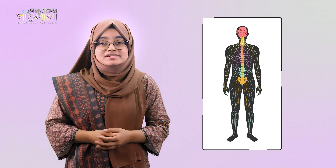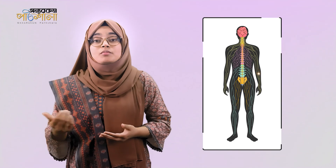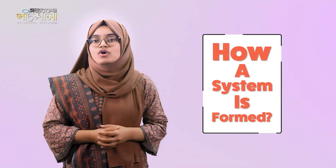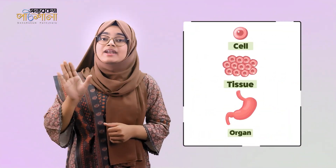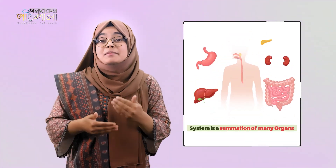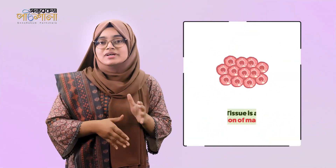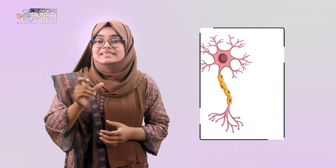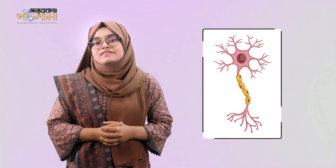To define the nervous system, we can simply say it is the system that carries impulse to different parts of the body. A system is formed from cell to tissue, tissue to organ, and organ to system. That means a system is a summation of many organs, an organ is a summation of many tissues, and a tissue is a collection of many cells. For the nervous system, this cell has a special name which is neuron, and that is the unit of the nervous system.